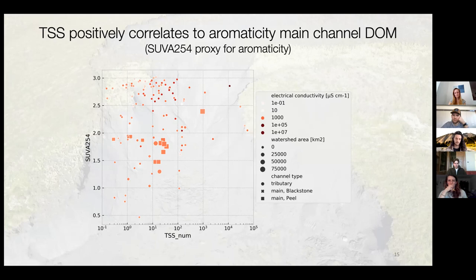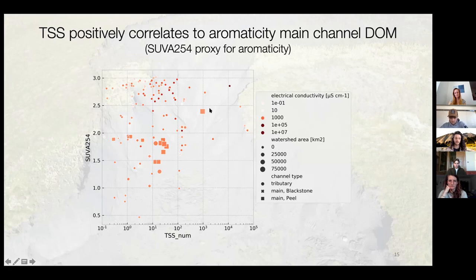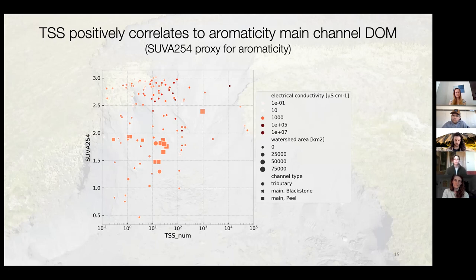For instance, if you look at SUVA — the specific UV absorbance at 254 nanometers, which is a proxy for aromaticity of organic matter — we see a slight trend in those square dots: the higher the suspended solids in the main stem, the higher the aromaticity of the dissolved organic matter. What this could hint towards is that this extra input of mineral surfaces is actually taking away dissolved organic matter that is easily absorbed, leaving in the water column a more aromatic type of dissolved organic matter, which could have implications for the ecosystem.